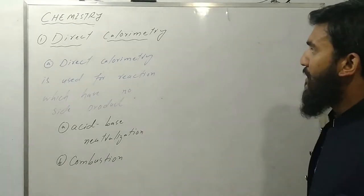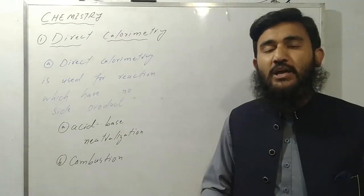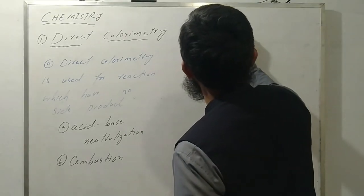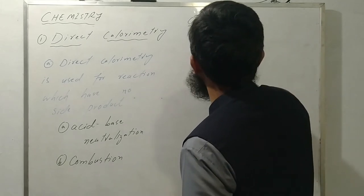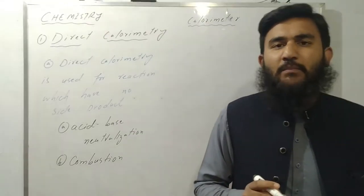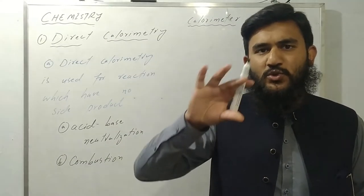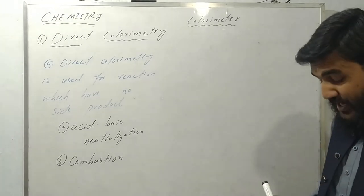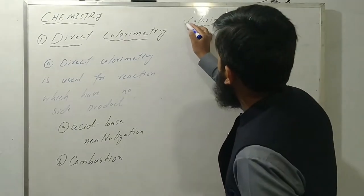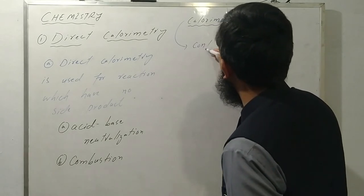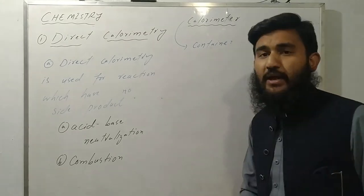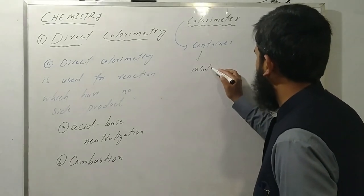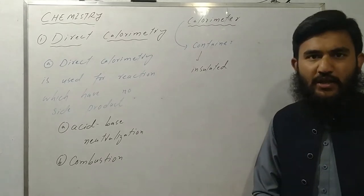Ab hum aate hain ke direct calorimetry ko measure kaise karte hain. Pehli cheez yaad rakhni hai ke jo setup liya jaata hai usko hum kehte hain calorimeter. Calorimetry yaani heat ko measure karne ke liye jo instrument ya setup use karte hain, us setup ko calorimeter kehte hain. Direct calorimetry mein calorimeter ek container hota hai — yeh kisi bhi cheez ka ho sakta hai — jo insulated hota hai, yaani insulated container.